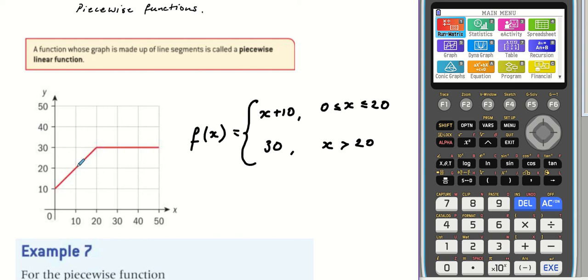From a piecewise function, we can plot graphs or we could have the graph and we define the piecewise function. We can then find different values when we're given the x. Let's look at how that works.